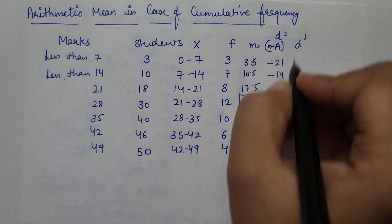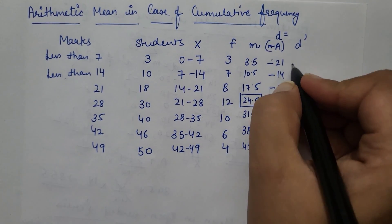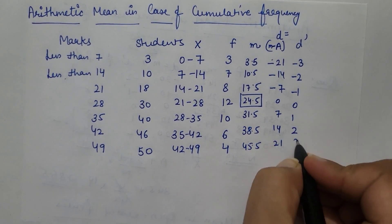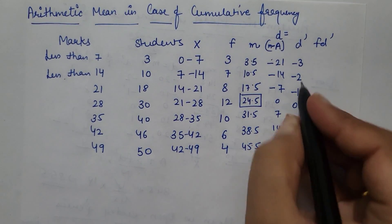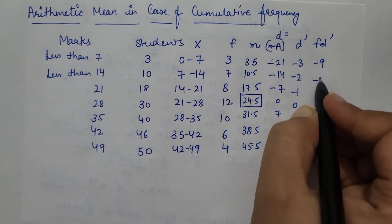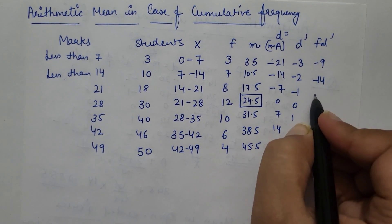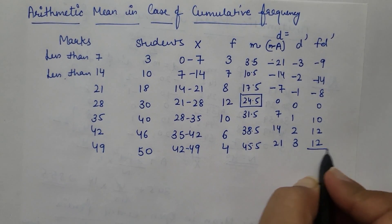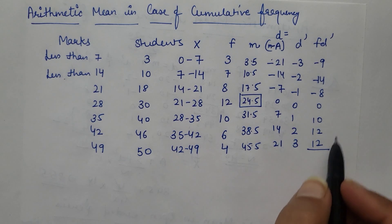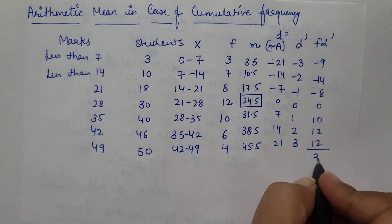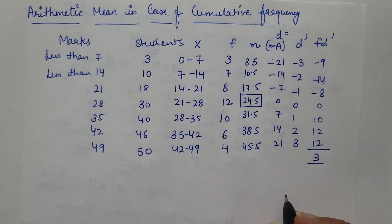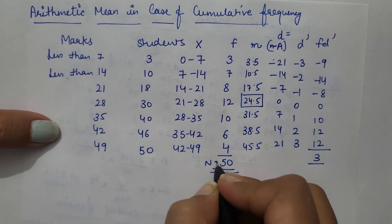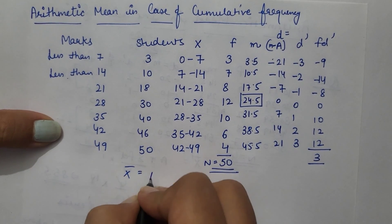Here, D dash can be calculated, common factor is 7 can be seen. So minus 3, minus 2, minus 1, 0, 1, 2, 3. And the last is FD dash. Frequency se multiply kar denge. So FD dash, sum up kar lenge, it would be 3. And frequency column, sum is required.